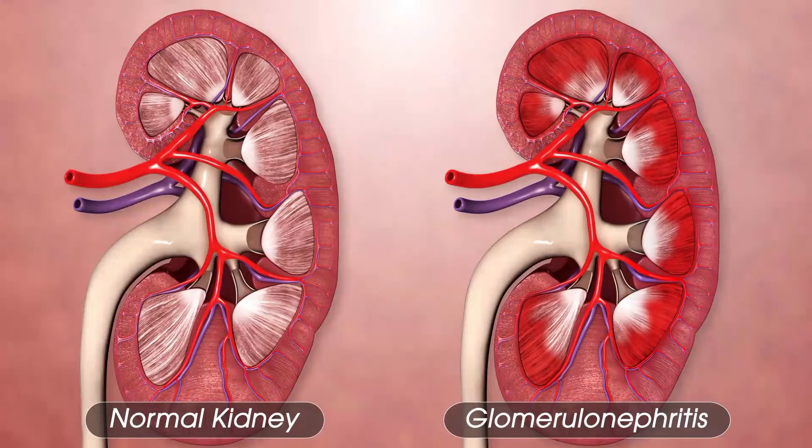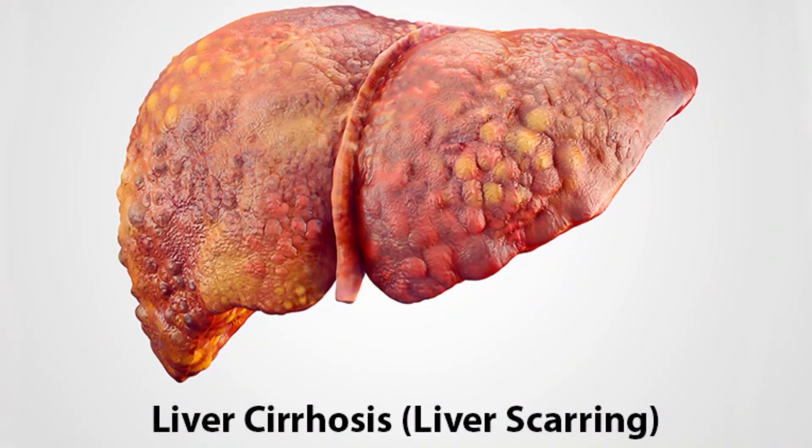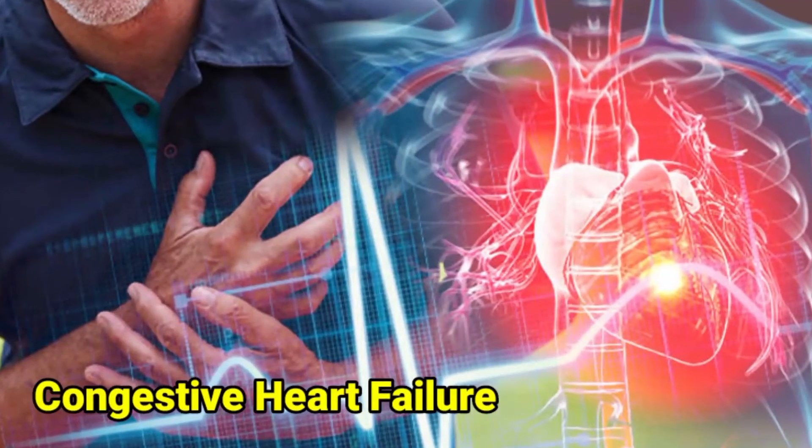Another important cause is cirrhosis of the liver, where the liver is shrunken and has decreased function. There is decreased synthesis of the protein albumin, associated with high pressure in the abdominal vein — portal venous hypertension. Because of low protein and high venous pressure, patients manifest with edema over the legs or face, marked distension of the abdomen due to ascites, and pedal edema.